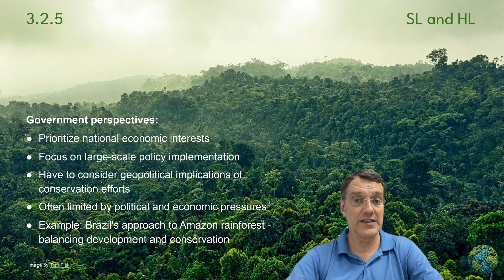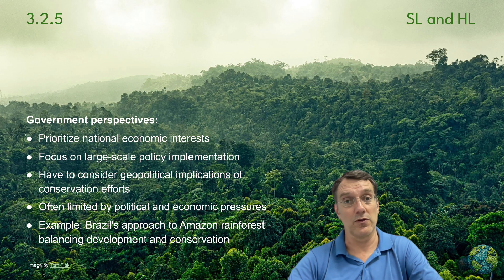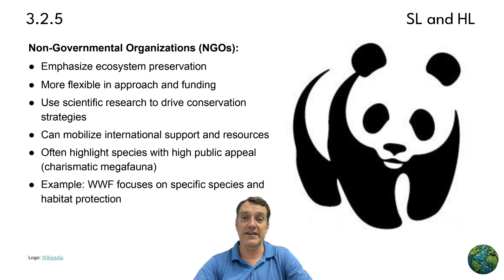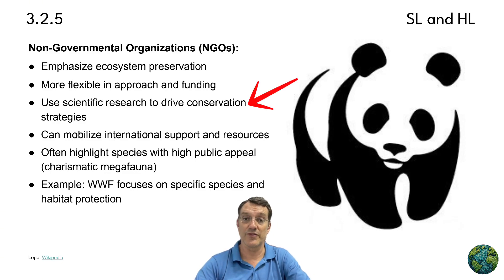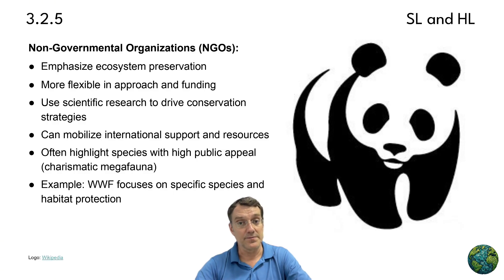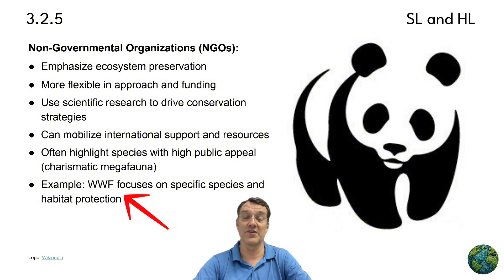Brazil's approach to the Amazon rainforest illustrates this challenge. The government has to balance the economic benefits of development with the ecological importance of preserving the world's largest rainforest. This balancing act shows how economic interests often compete with conservation goals. Non-governmental organizations focus primarily on ecosystem preservation and have more flexibility than governments in their approaches and funding models. Groups like the WWF use scientific research to guide conservation strategies and often highlight charismatic species like pandas to gain public support. NGOs can mobilize international resources and public awareness through campaigns, research, and direct conservation action, creating more targeted conservation programs than government efforts can.